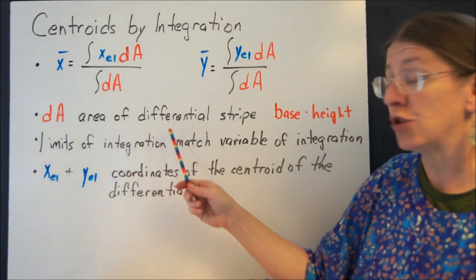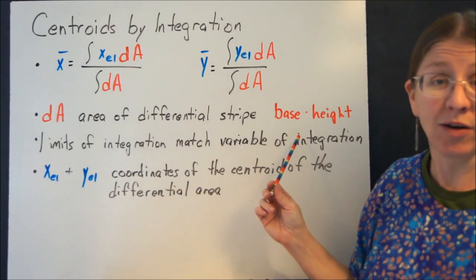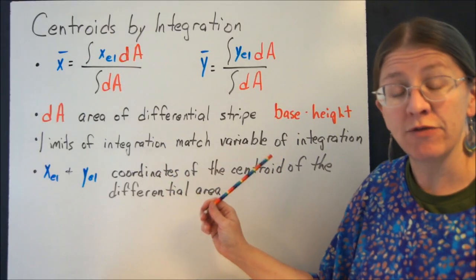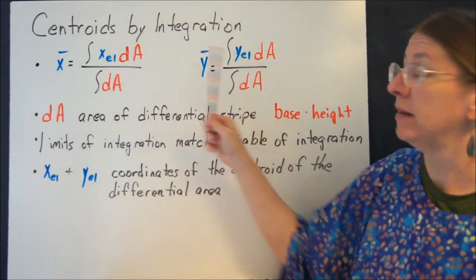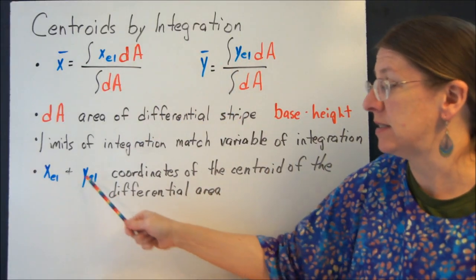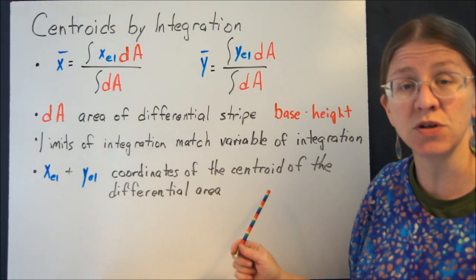Whatever your differential area is, dA is the area of that differential area. Your limits of integration have to match whatever you're going to differentiate with respect to. And when you actually plug in these integrals, these need to be the coordinates of the centroid of the differential area.